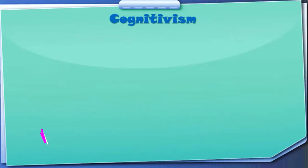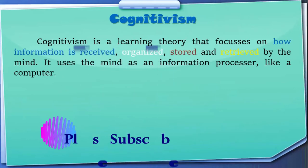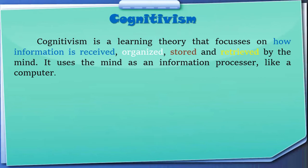Now we are going to talk about cognitivism. Cognitivism is a learning theory that focuses on how information is received, organized, stored, and retrieved by the mind. It uses the mind as an information processor, like a computer. So cognitivism is about how we gather information, how we store it in our mind, and sometimes how we forget things.